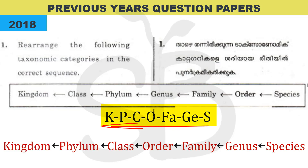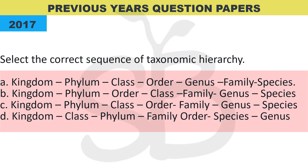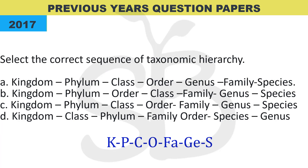You can use ascending order or descending order depending on the question. The next question is: 'Select the correct sequence of taxonomical hierarchy.' We arrange using the same method — KPCOFGS — Kingdom, Phylum, Division, Class, Order, Family, Genus, Species. The correct answer is Option C.